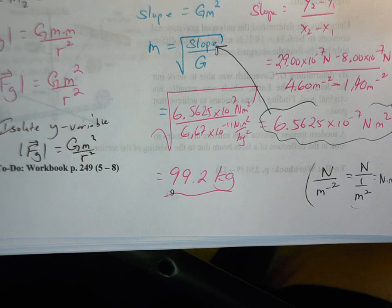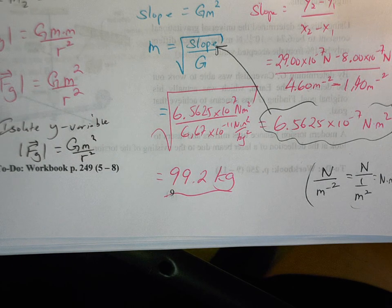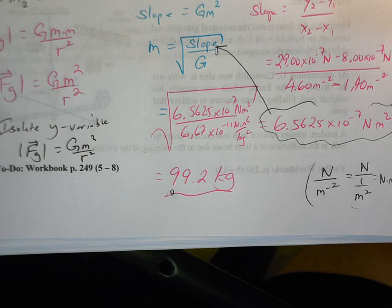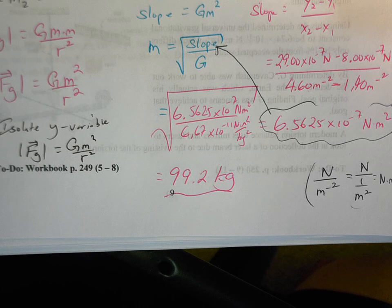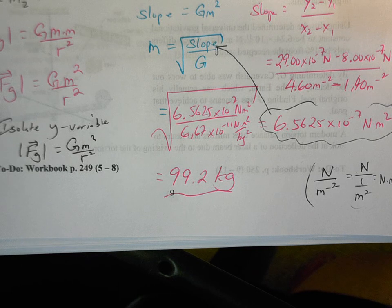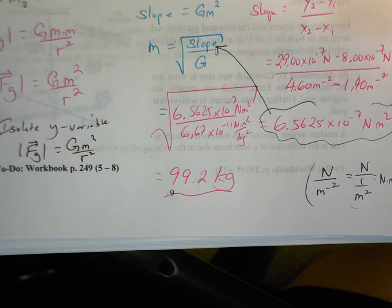So as I said, on an exam, we would get the exact answer and say, as long as you're within about 5% of that, you're doing fine. So based on graphical analysis and using my slope, I've determined that the mass of each individual object is going to be about 99.2 kilograms.